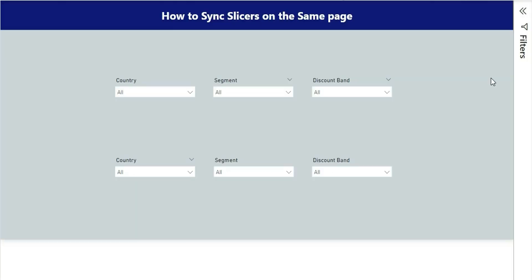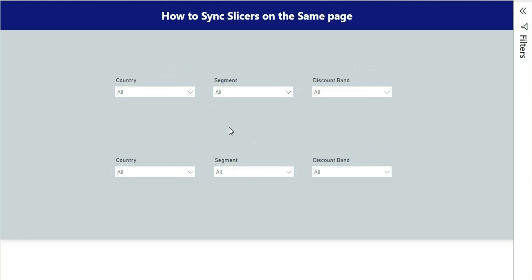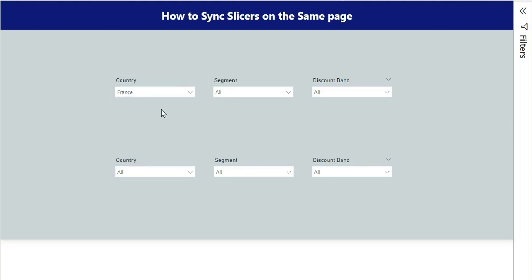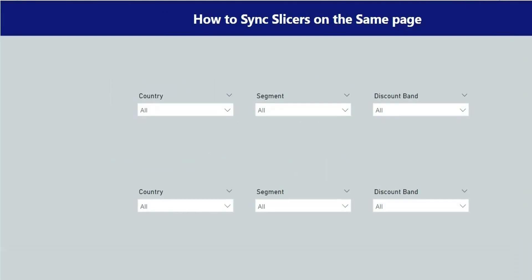In this video I'm going to show you how to sync slicers on the same page. Generally we have an option to sync slicers across different pages, but here I'm going to show you how to do it on the same page. We have three slicers for country, segment, and discount band at the top, and the same three slicers at the bottom. The requirement is that whenever we select anything from the top country slicer it should also be reflected in the bottom country slicer, and vice versa.